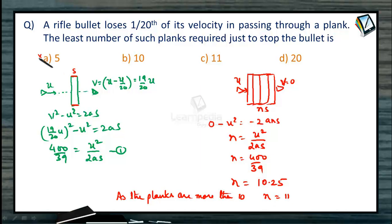So correct option: 5 is wrong, 10 is wrong. Correct option you should take is 11. 20 is also wrong. So correct option will be number of planks required to just stop the bullet is 11.